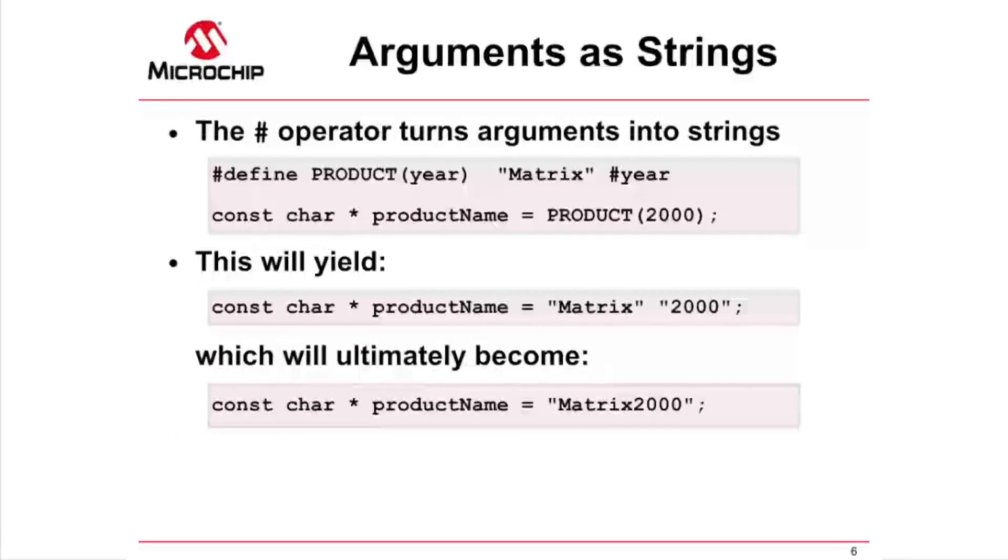There are some special operators you can use when a macro has arguments. One is the # operator, which turns arguments into C strings. In the example in the top box, the variable product_name will point to a string matrix2000 after preprocessing. During expansion, double quotes are placed around the #year tokens. Then these are replaced with the argument value, in this case 2000. The usual C string concatenation joins the string matrix with the expanded year string.